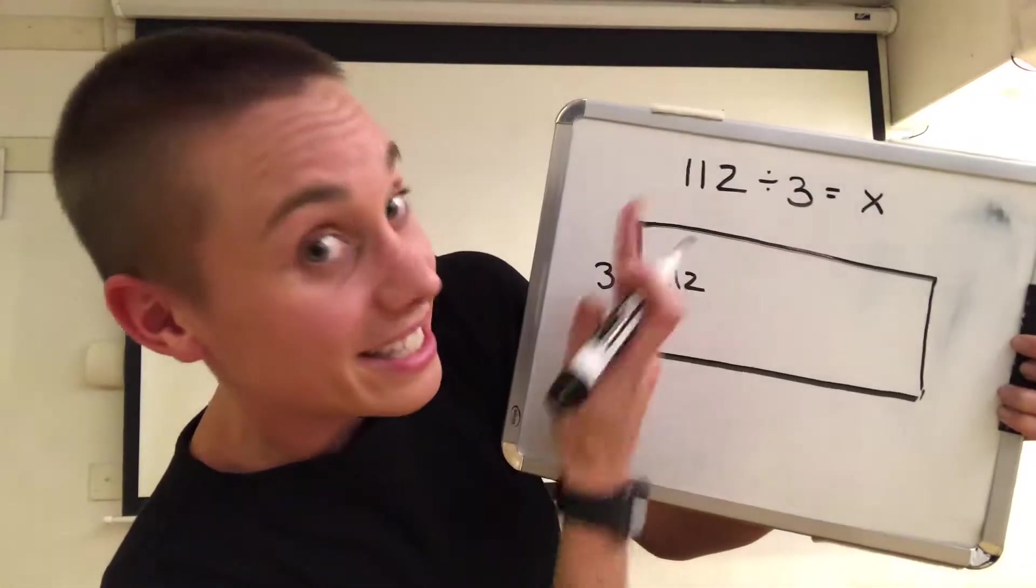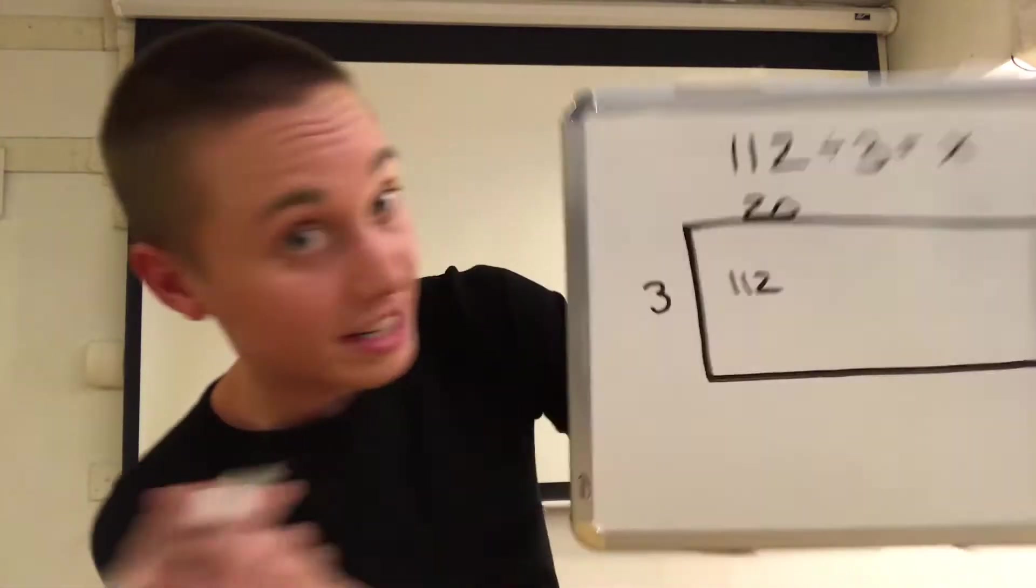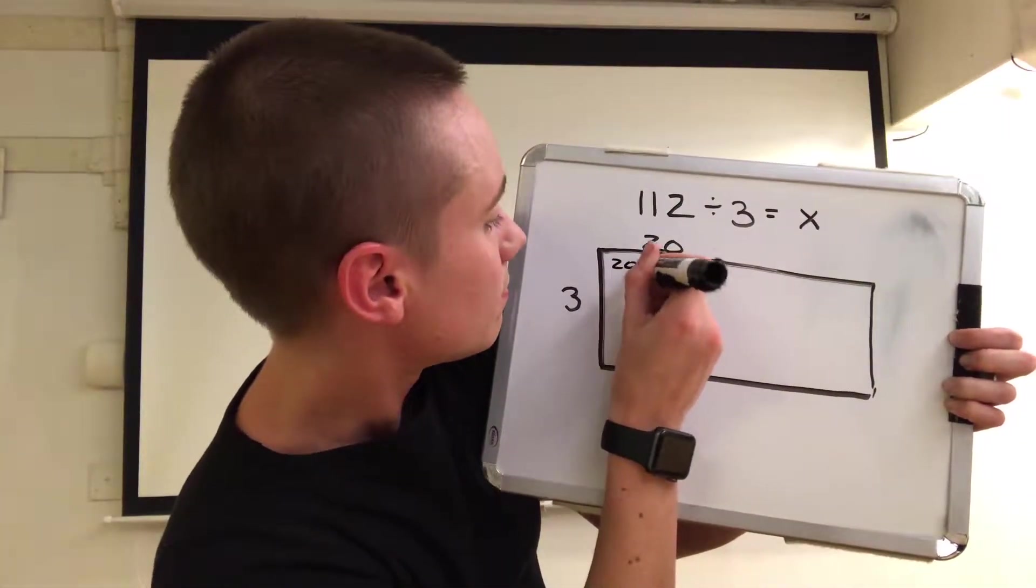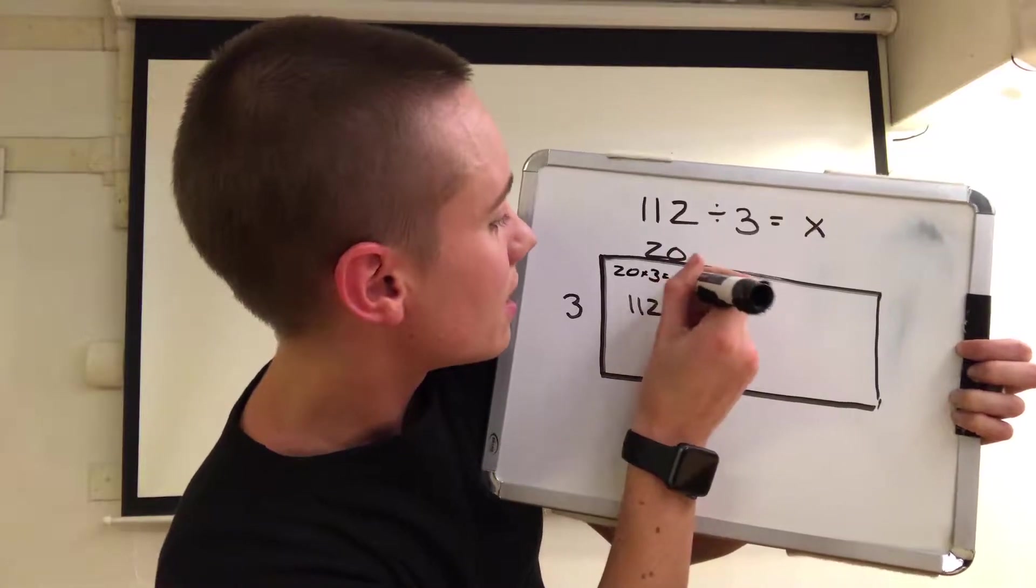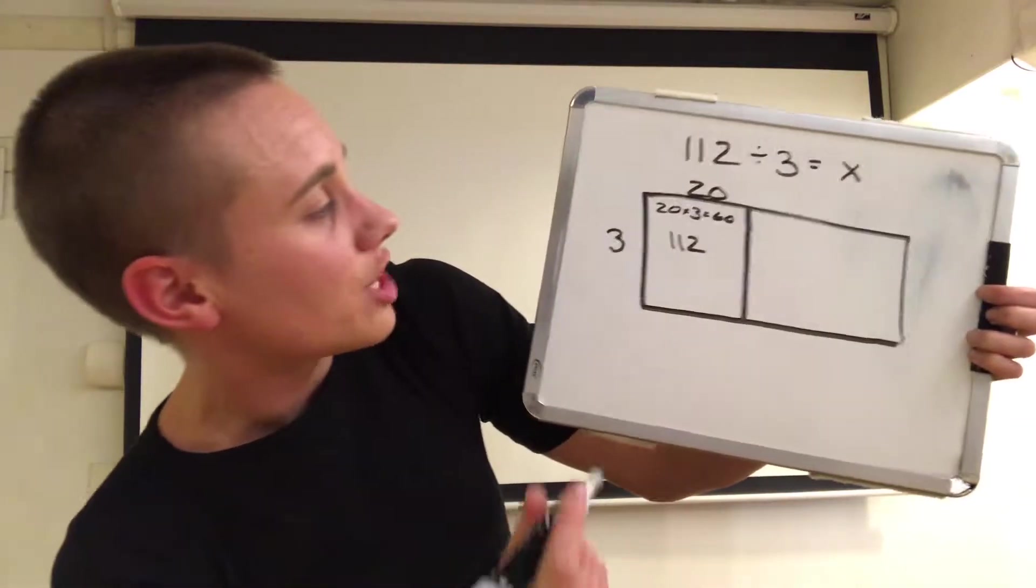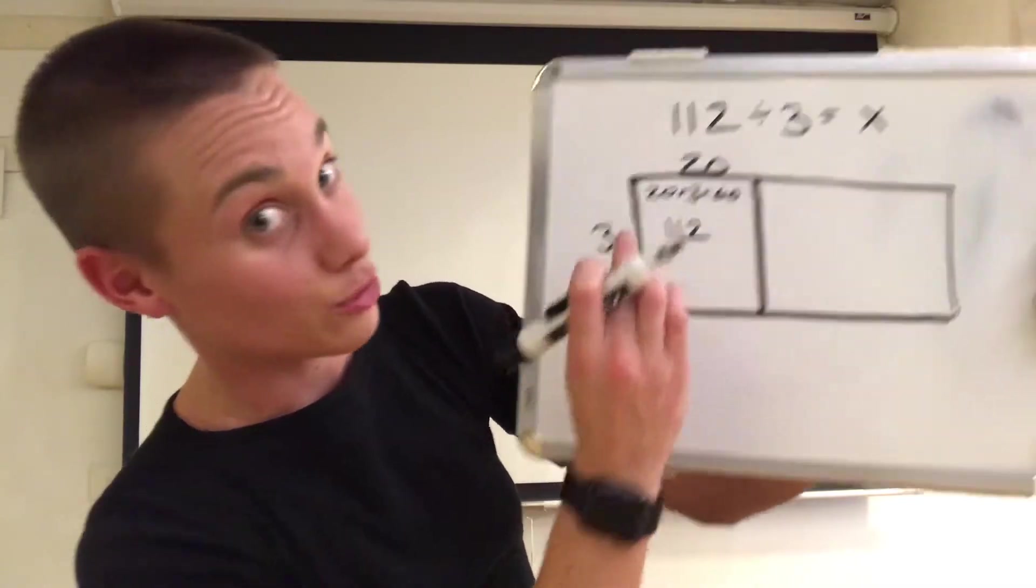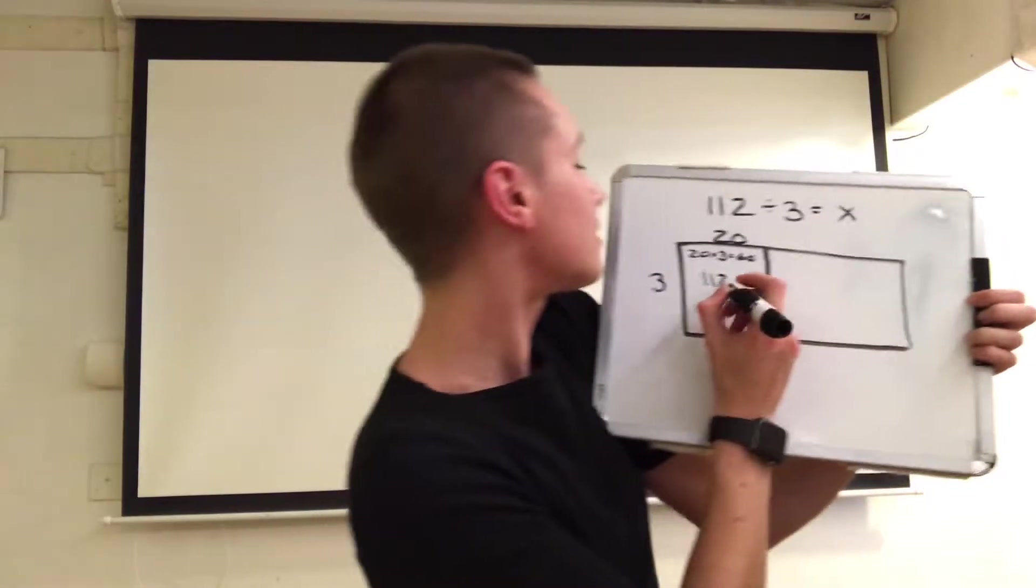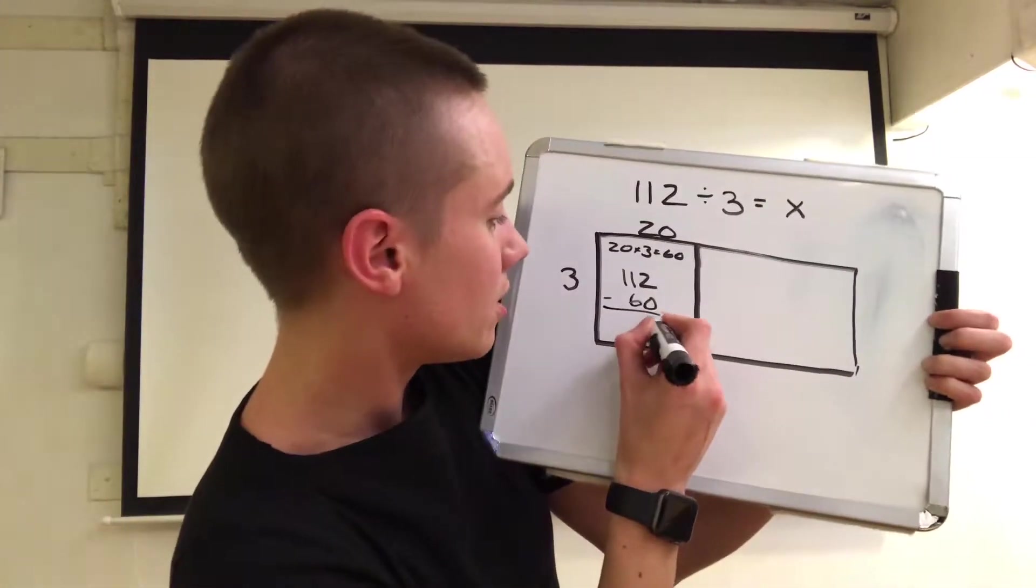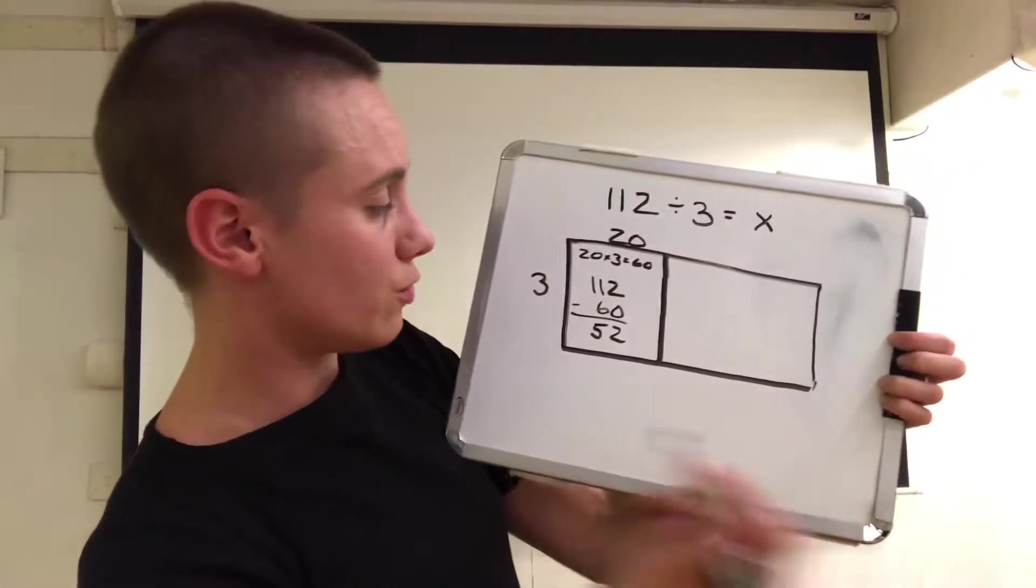I'm going to choose 60 as this area. So I'm going to make this length 20 because I know to find this area, 20 times 3 equals 60. I'm going to break off just this section. I know the area of just this section is 60 because it's 3 times 20. I'm going to subtract 60 from my total of 112. 11 minus 6 is 5, to get 52 ice cubes still left over.